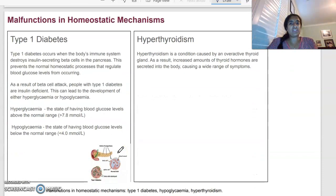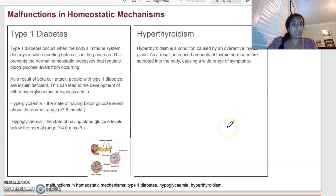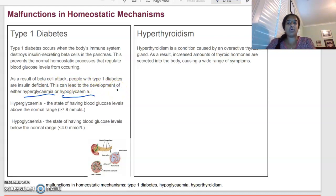In terms of malfunctions of homeostatic mechanisms, this is where homeostasis isn't occurring the way that it should. So those hormones aren't acting the way that they should be or they aren't being secreted. And type 1 diabetes, you may have heard in response to glucose regulation. So type 1 diabetes basically occurs when the body cannot secrete insulin. So it's basically destroying insulin-secreting beta cells in the pancreas. And so this prevents normal blood glucose regulation from happening because glucose can't be decreased because insulin is not being secreted. So as a result, beta cells basically attack people with type 1 diabetes, are insulin deficient and can lead to the development of hyperglycemia or hypoglycemia.